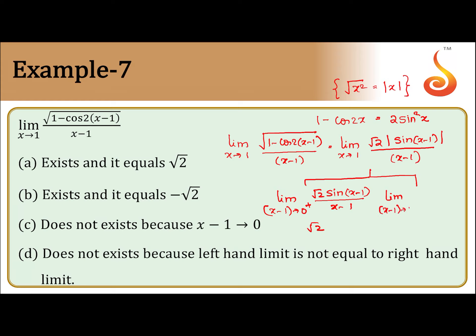Similarly, limit as (x-1) tends to 0 minus, this will give you minus root 2 sin(x-1) by (x-1), which will lead to minus root 2. So left hand limit is not equal to right hand limit - this was right hand limit, this was left hand limit. Both are not equal, therefore limit does not exist.